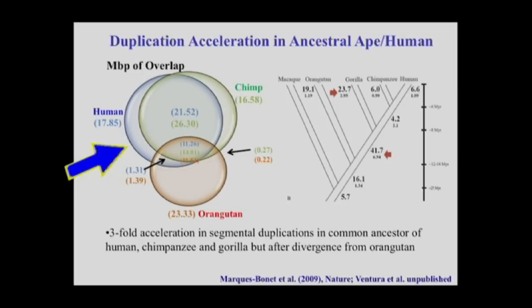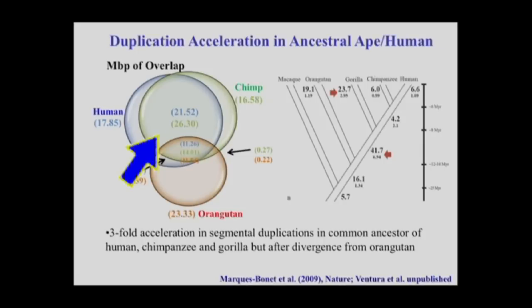What about the duplication architecture in humans and great apes? In terms of the timing of these events, we've had the opportunity to look at chimpanzee, orangutan, and other species. More recently, we sequenced the gorilla genome to estimate the timing of different duplications. This Venn diagram shows the most recent duplications and how they relate — whether they're shared between human and chimp, or specific to one lineage. Looking at this map going back about 25 million years, you can see the orangutan circle is significantly smaller than that of human or chimp, indicating less duplication in the orangutan lineage.